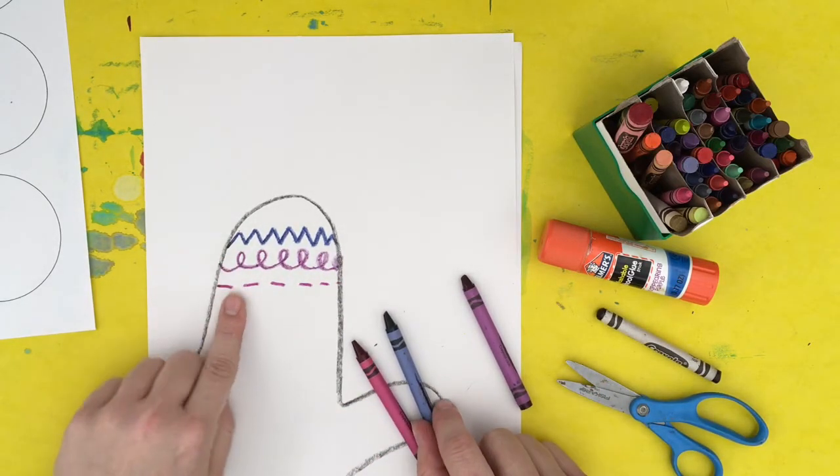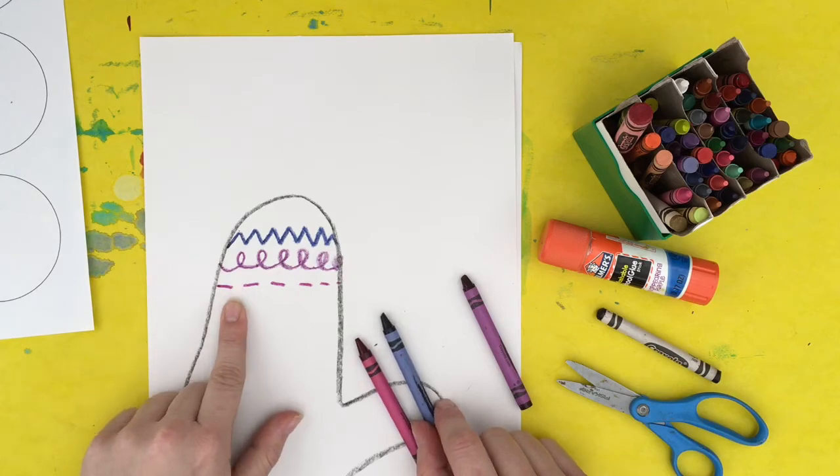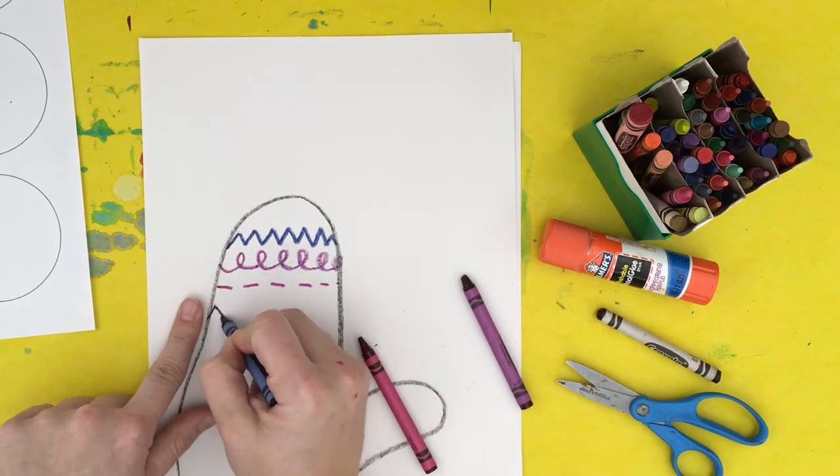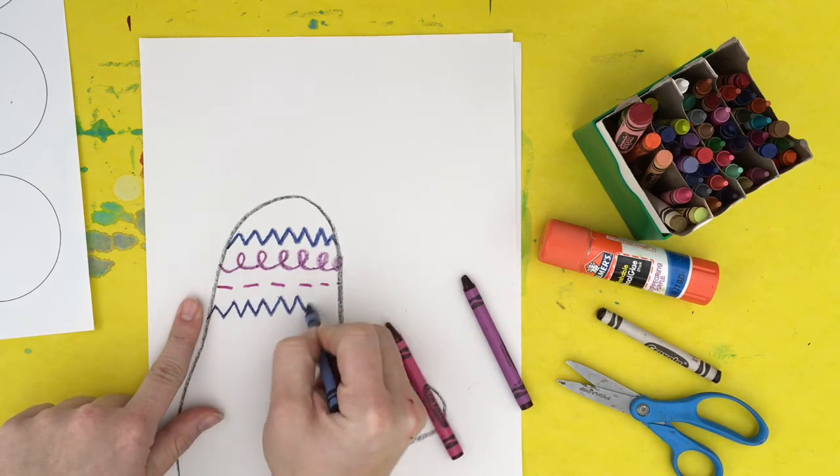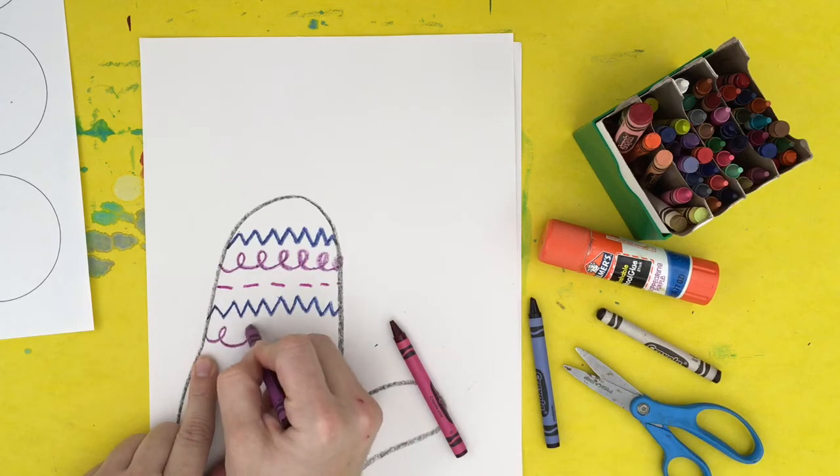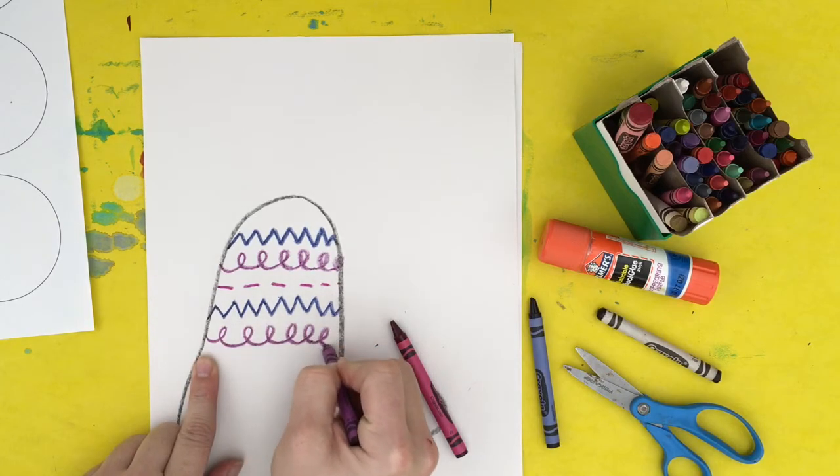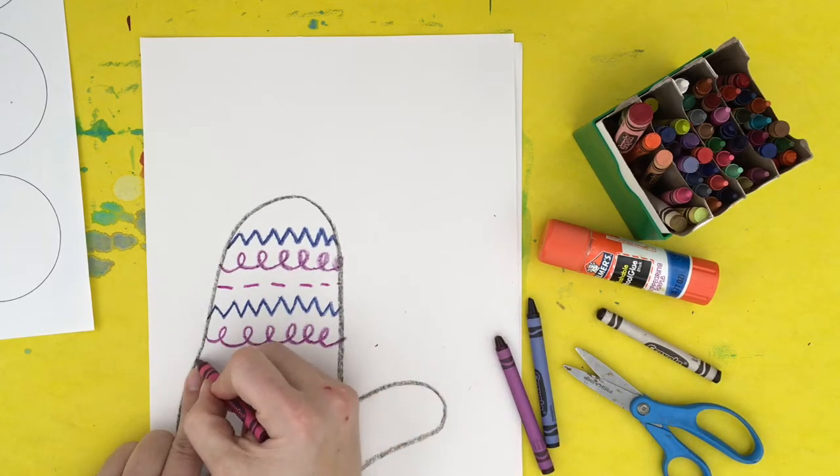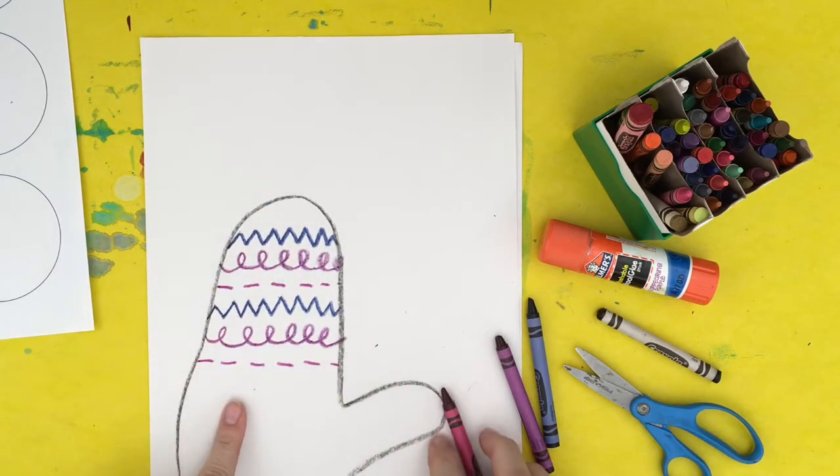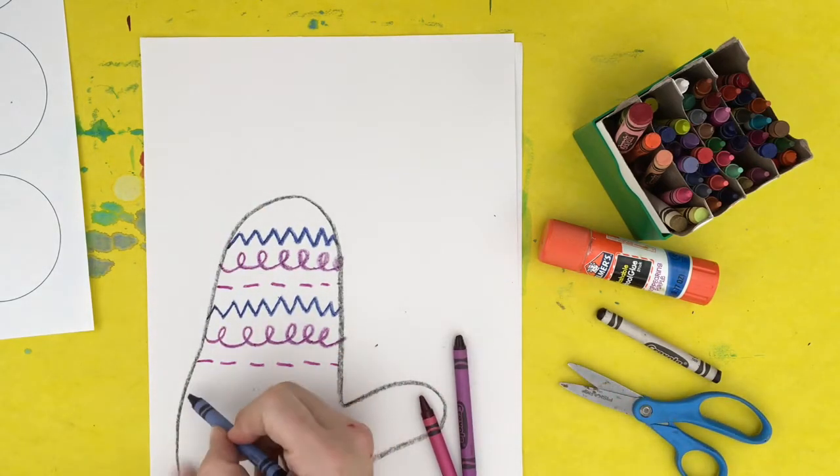I have blue, purple, and red violet and what I'm going to do is repeat. I'm going to do my zigzag blue from one side to the other, and then my purple loopy, and then my dashed. I just made a pattern. I'm going to continue my pattern until I get to the bottom. Zigzag blue, purple loopy.